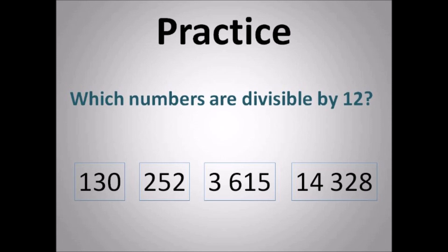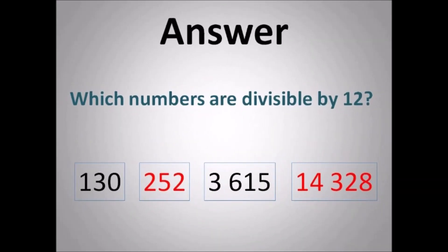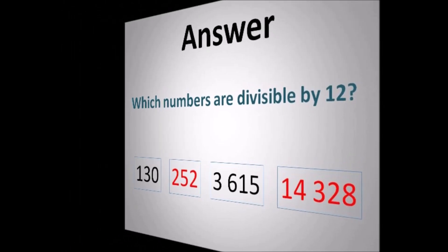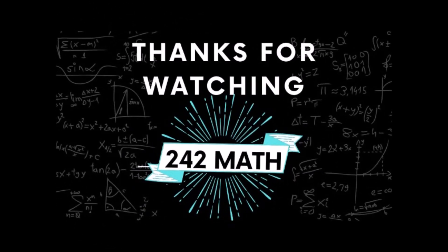Which numbers are divisible by 12? Remember the rule and work it out. Those two numbers — the numbers must be able to be divided by 3 and 4 for a number to be divisible by 12. So those two numbers are divisible by both 3 and 4 and are therefore also divisible by 12.